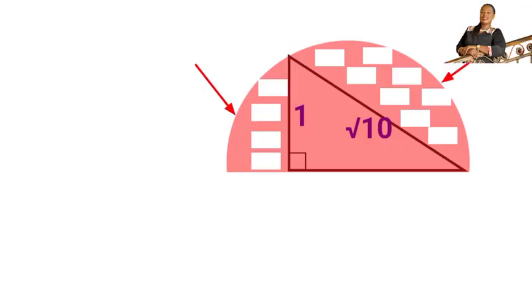To find the area of the shaded portion in the semicircle, we have to first find the area of the right triangle and also find the area of a semicircle. Then, we subtract the area of the right triangle from the area of the semicircle to get the area of the shaded portion.